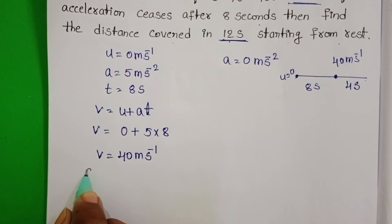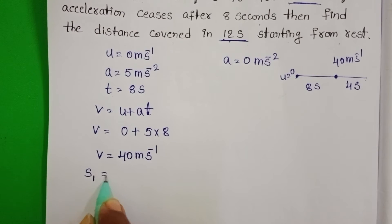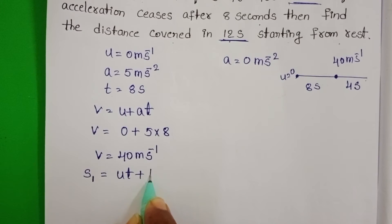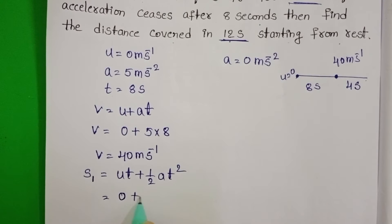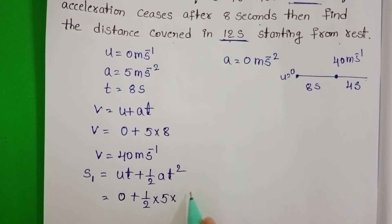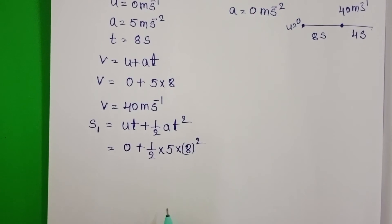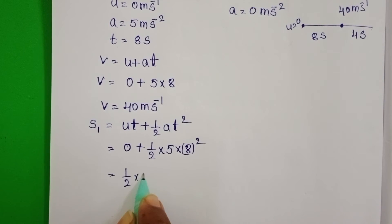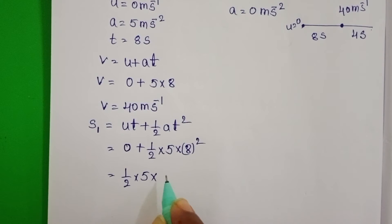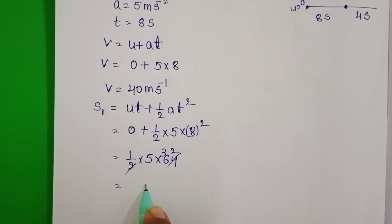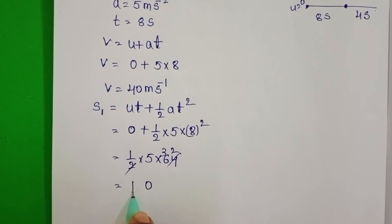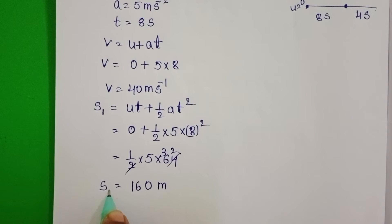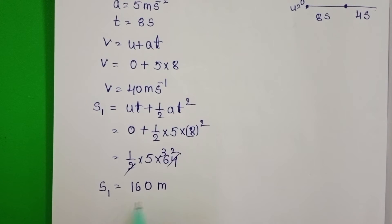In the first 8 seconds, the distance travelled by the car is S1 = UT + ½AT². The UT term is 0. So S1 = ½ × 5 × 8² = ½ × 5 × 64 = 160 meters. In the first 8 seconds, the distance travelled by the car is 160 meters.